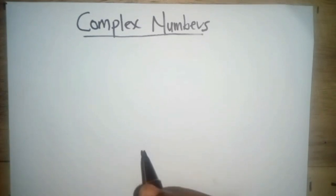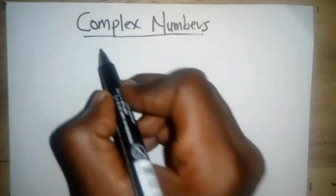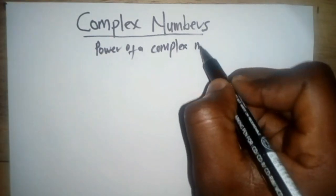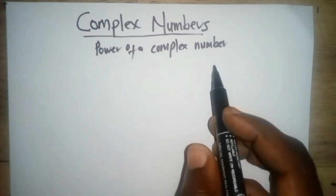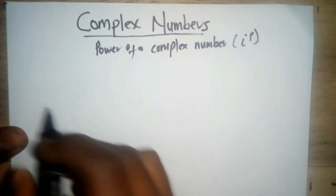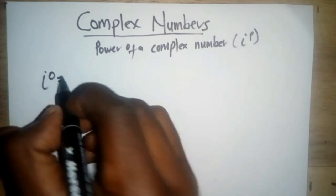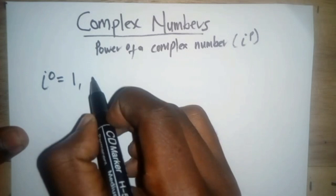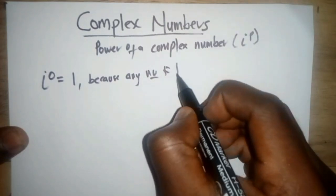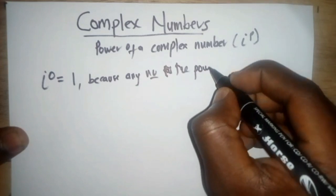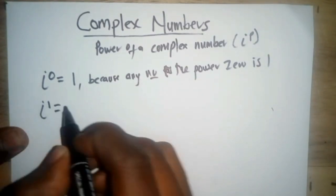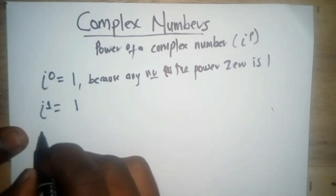We'll quickly talk about complex numbers, and we are interested in the powers of a complex number. It is normally represented by i. We have i to the power zero — i to the power zero is just one, because any number to the power zero is one. Then we have i to the power one, which is just i. Then we have i to the power two.